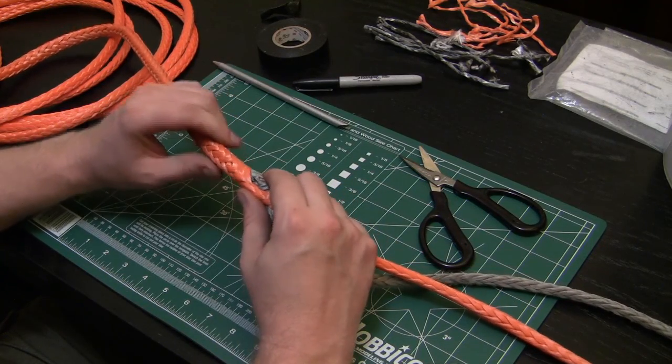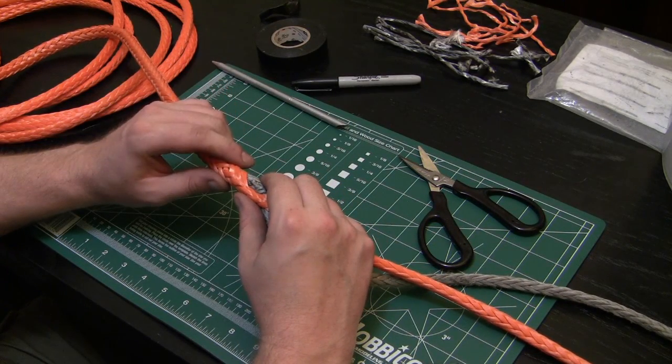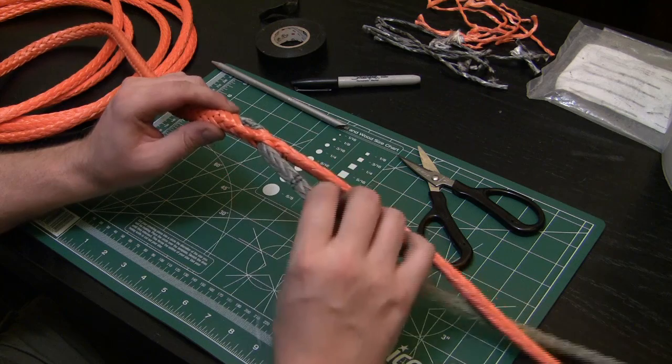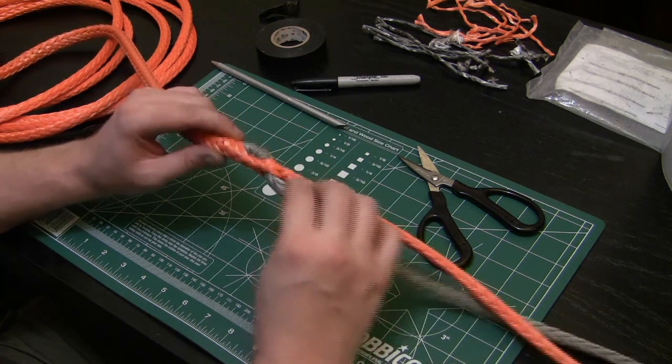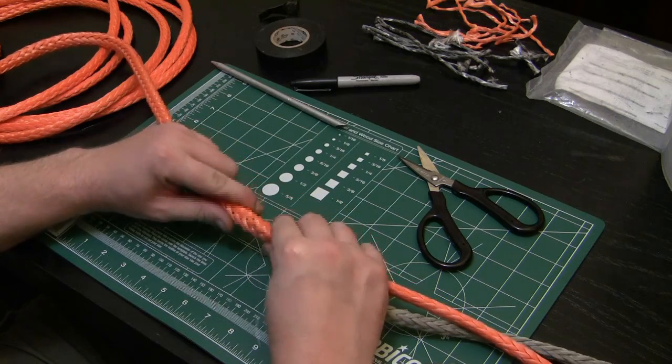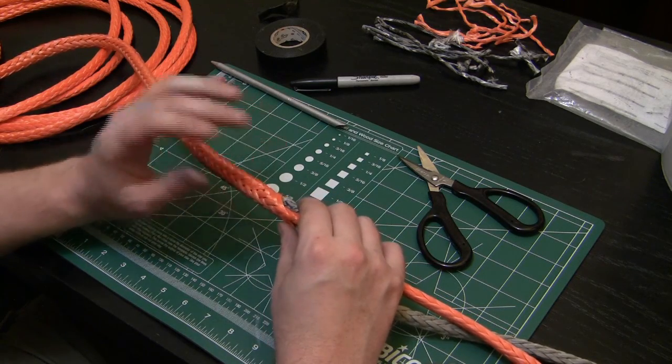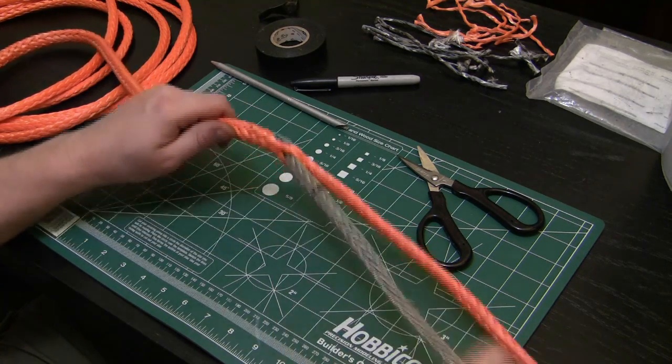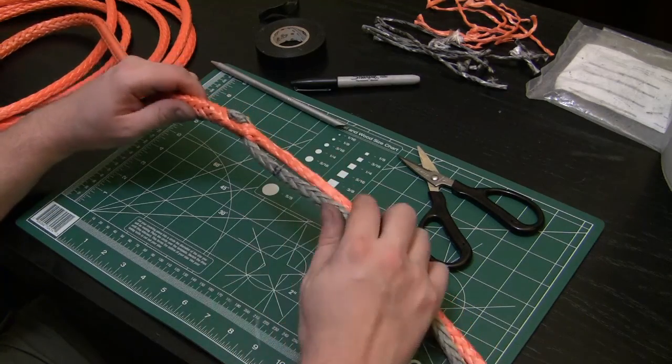Now what I like to do is do my lock stitch on this one before doing the other end, because the rope can slip around and then you have to pull the whole thing out and do the berry again. We'll get to the lock stitching for this side and then we'll basically repeat the same process for the other side.